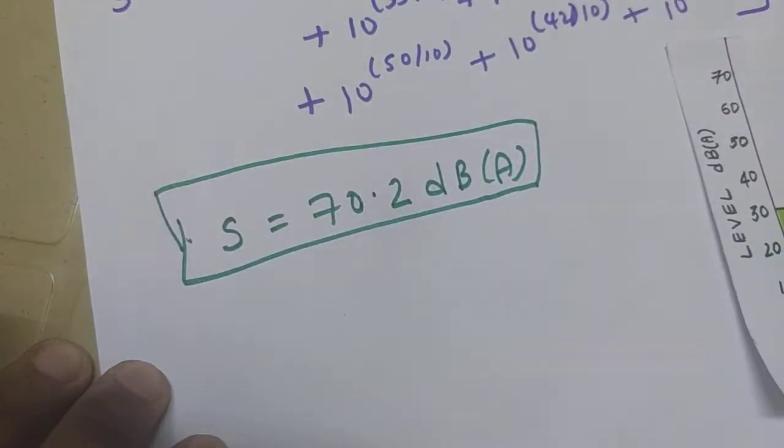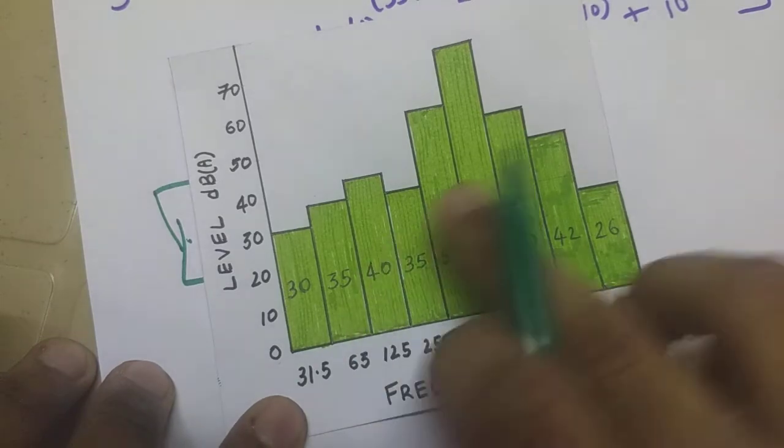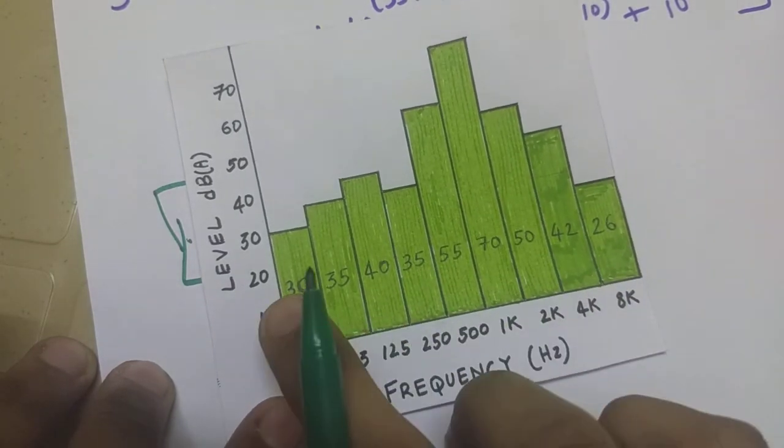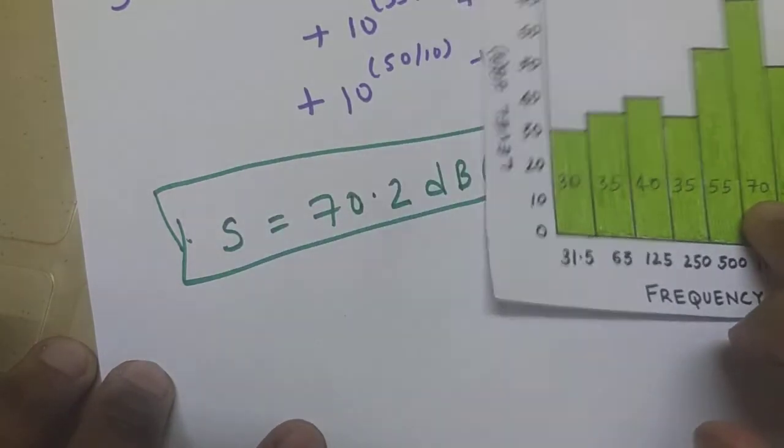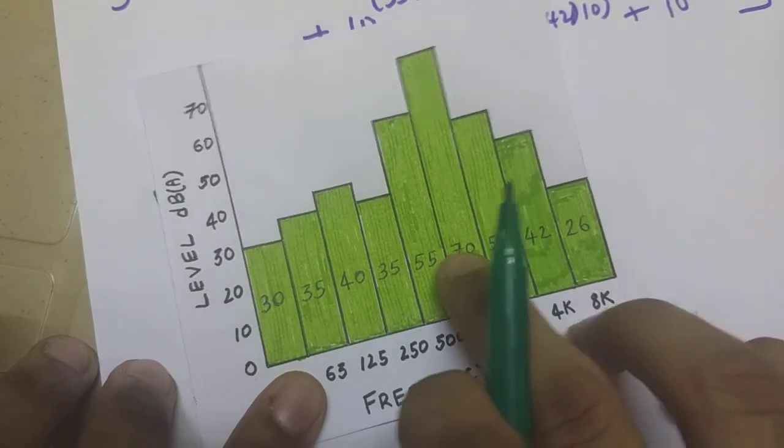So this value 70.2 is the overall or the logarithmic addition of all these values put together. If you observe very closely the answer 70.2 is pretty close or slightly greater than the largest value.